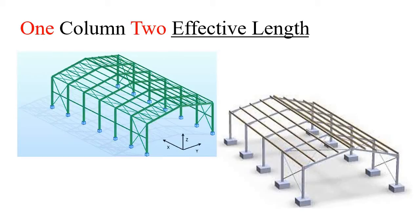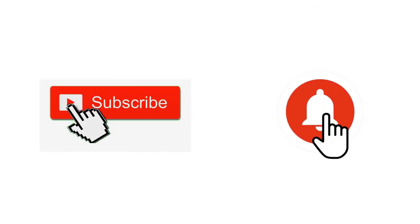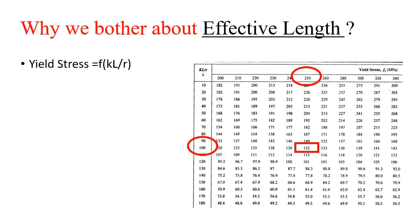In this video I will talk about how it is possible to have two different effective lengths for a particular single column, and at the end of the video I will explain how you can assign those two different effective lengths — known as Lx and Ly — in your model. If you are new to this channel, please subscribe and press the bell icon.